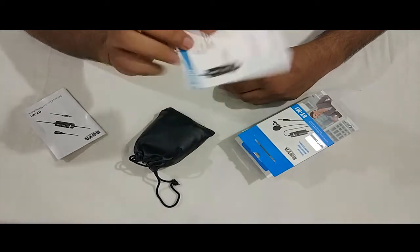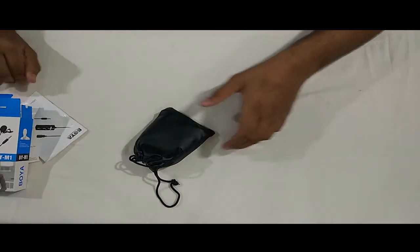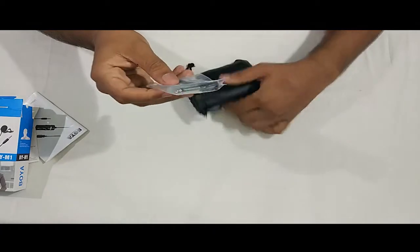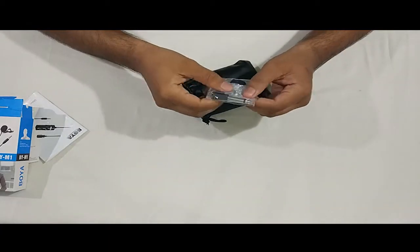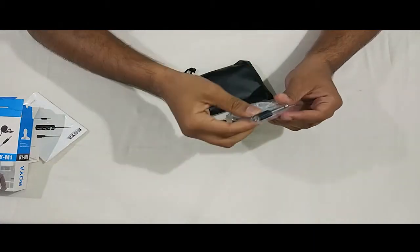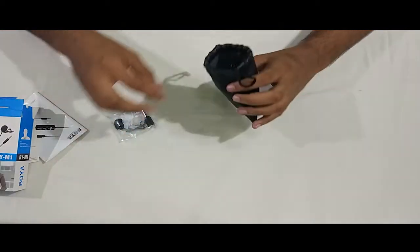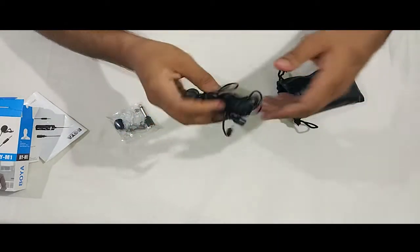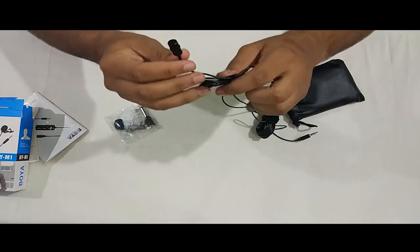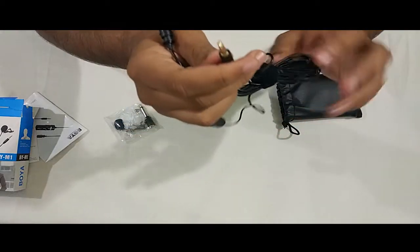We are going to open this pouch. Okay, the first we are getting a battery that is LR44 battery and the adapter and the foam screen and the clip. Here we got the mic with a very long wire and here's the microphone and here is the 3.5 mm headphone jack.